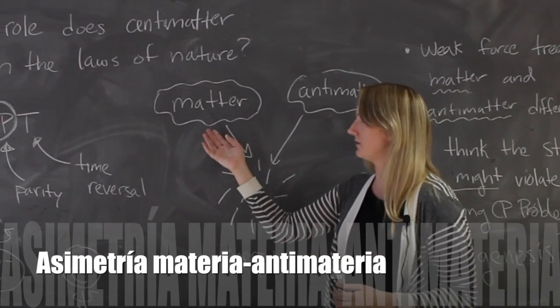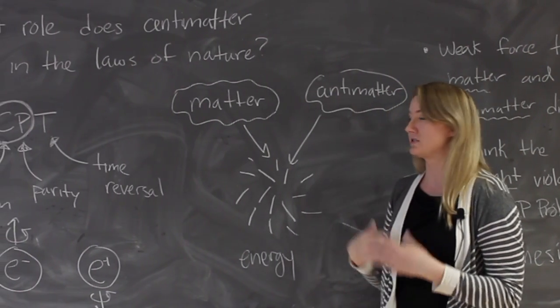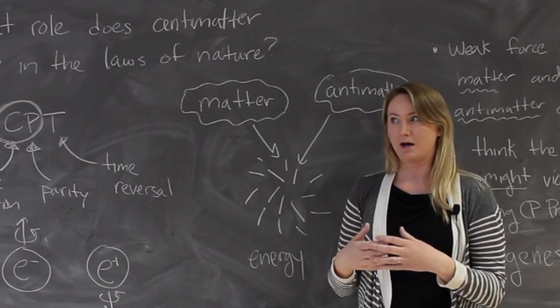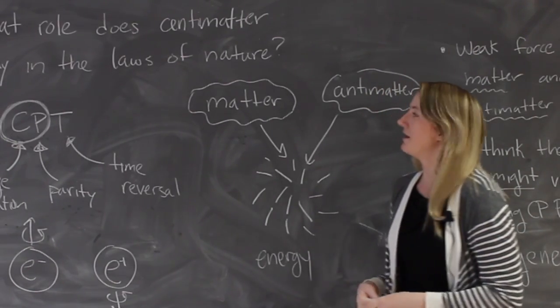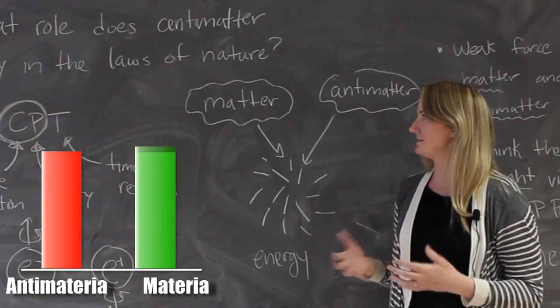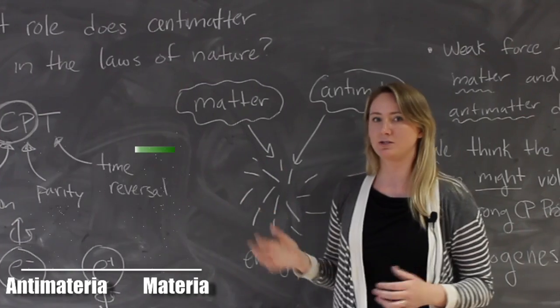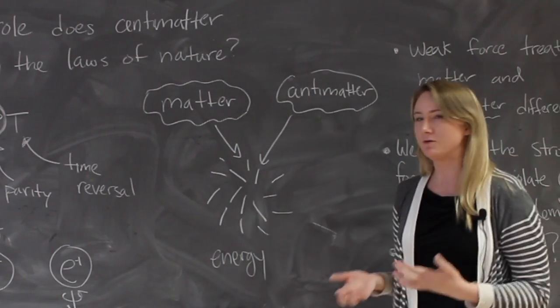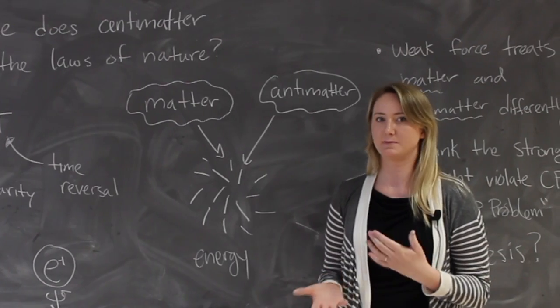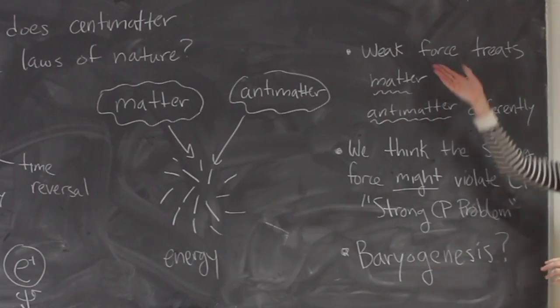For some reason the universe preferentially chose matter over antimatter - stars are made of matter, the earth is made of matter, and human beings are made of matter. So our existence is dependent on the fact that nature actually does treat matter and antimatter differently, and we know this is true because we have experimentally measured it.